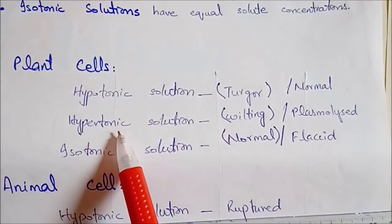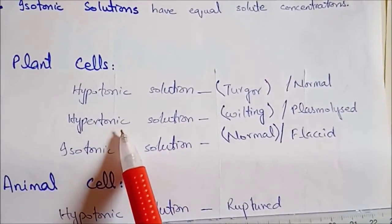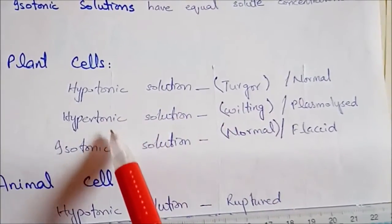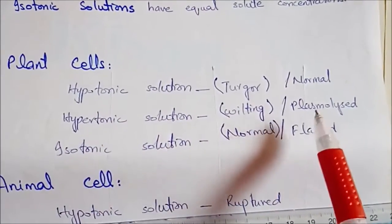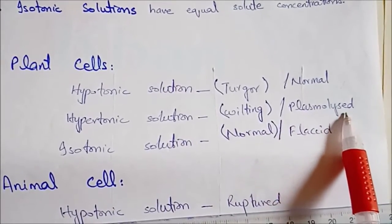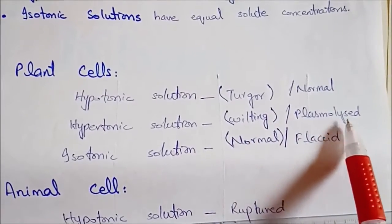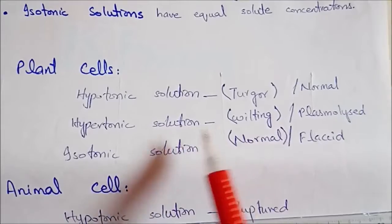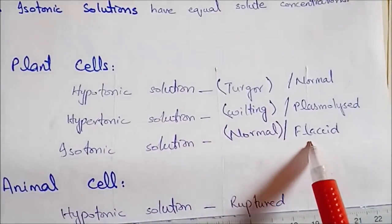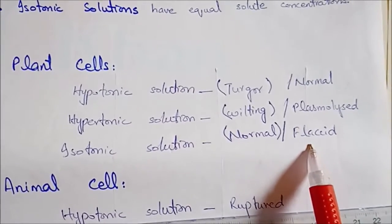Agar aap plant cell ko hypertonic solution mein rakhen — jo bahut zyada gadha ho — to plant cell plasmolyzed ho jayega, plant mujha jayega, cell shrink kar jayega. Aur agar aap plant cell ko isotonic solution mein rakhen to wo flaccid sa, dhila dhala sa ho jayega, jiske wajah se plant bhi overall dhila dhala ho jayega.